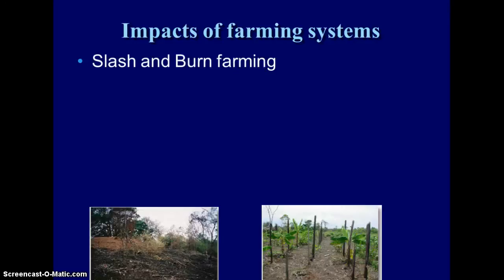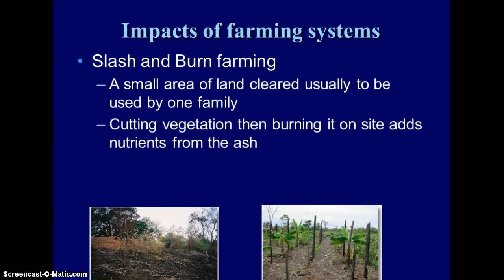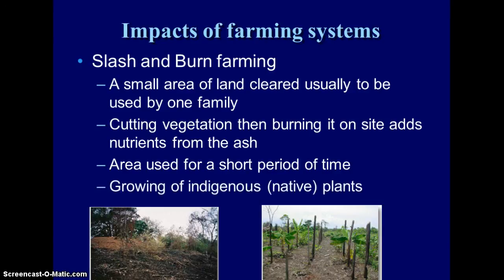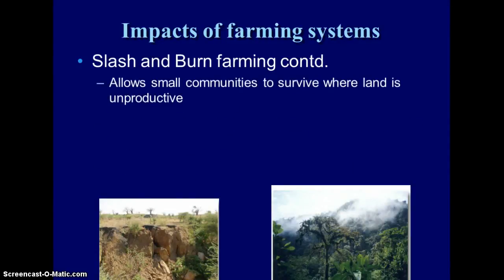Slash and burn farming does not have the same impact that our industrial farms do, as long as it's done sustainably. Typically it's a family that clears a small area of land. They're going to burn any vegetation on site, and so what happens is the nutrients that were stored in the plants get added back to the soil. The nutrients only last for a short period of time, and then the family would clear another area and allow that area to grow back. This works for growing indigenous plants, and usually they're not going to use fertilizers because they've got the nutrients there, and they're not going to use pesticides because they're growing plants that are native to the area.